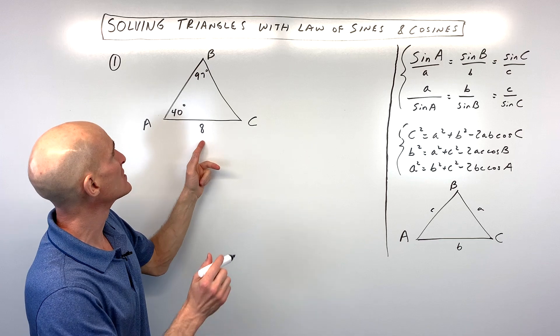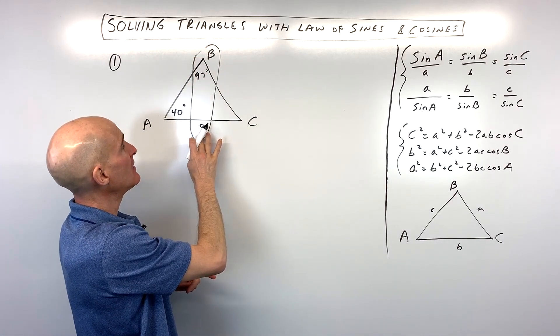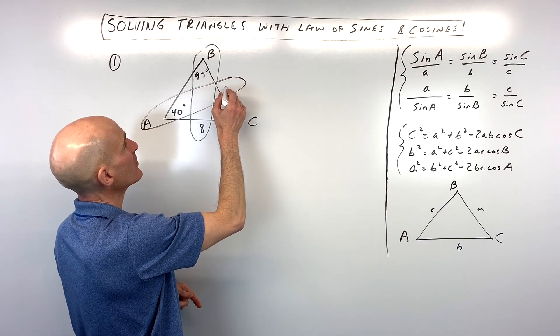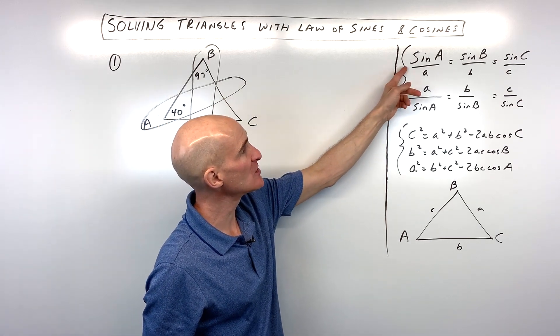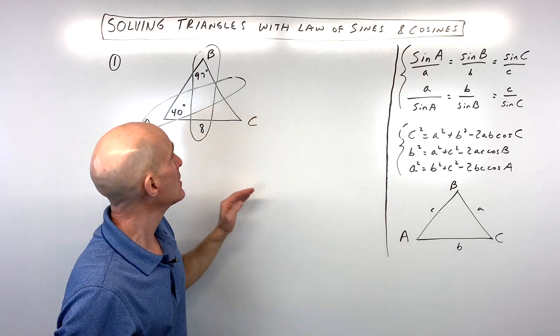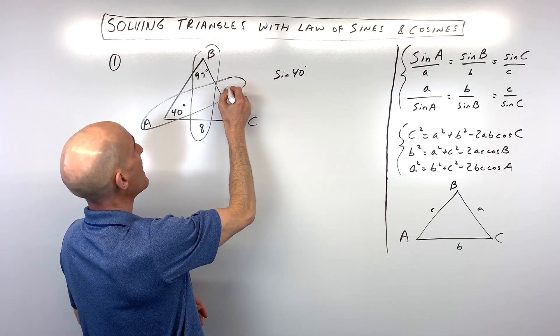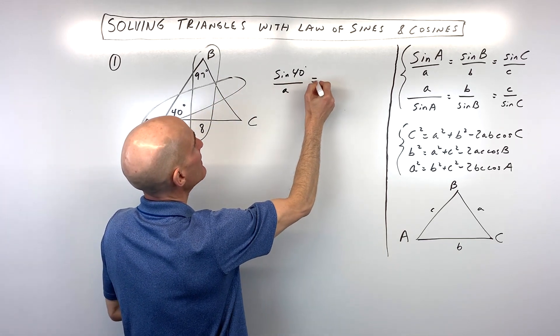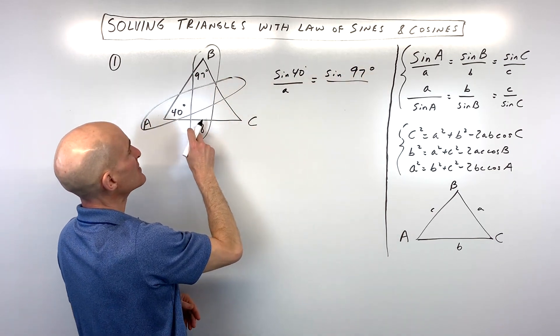The first thing you want to notice is that you see how they have this angle 97 degrees and the side across from it 8? And here we have 40 degrees, but we don't know the side across from it. So, how are we going to find this missing side? Well, that's where the law of sines comes in. You can use either this top one or this bottom one. They're just reciprocals of one another. So, let's go ahead and set this up. We've got the sine of 40 degrees over its side opposite. I'm going to call that side A because it's across from angle A.